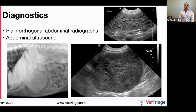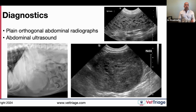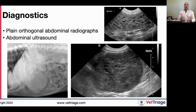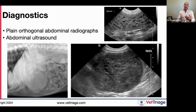Abdominal radiographs are very useful. A homogeneously enlarged soft tissue mass in the cranial ventral abdomen is most likely spleen, but keep in mind it could be liver, kidney, adrenal gland, pancreas, small intestine, or lymph node. Ultrasound provides more detail — a targetoid lesion is classic for hemangiosarcoma, while splenic lymphoma can have a more nodular appearance. Ultrasound is imperative not just for characterizing the splenic mass but also for identifying metastatic disease in the liver, omentum, and mesentery.